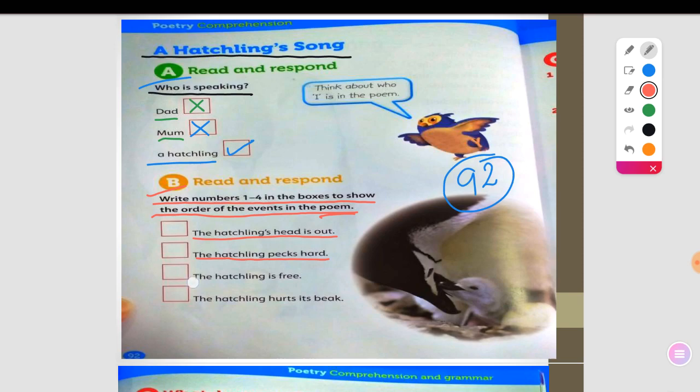Which is number one. We are looking for the first event. The hatchling is free. Which is the first one? Or the hatchling hurts its beak. Can you tell me which is the first one here?